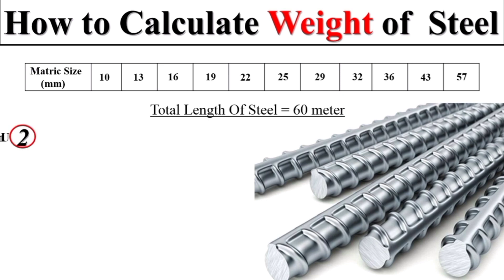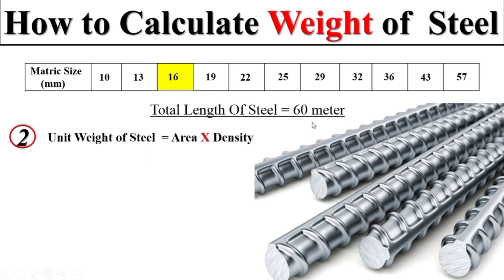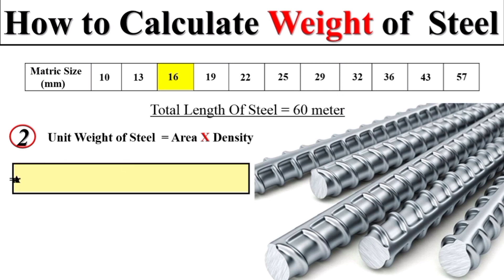We can also calculate the weight of steel using a second approach: unit weight equals cross-sectional area multiplied by density. For the 16 mm diameter bar, we first calculate the total cross-sectional area using the formula: Area = (π/4) × D². Substituting all values in meters, we get the total area of the 16 mm diameter bar.